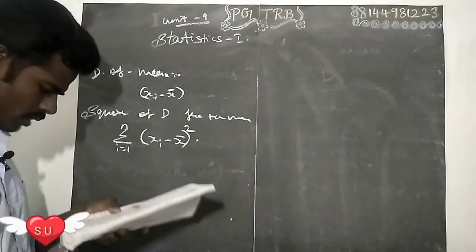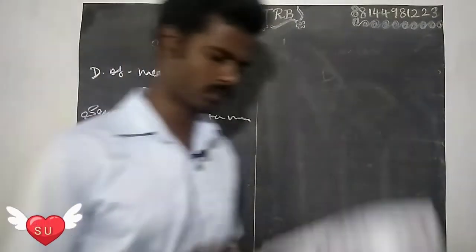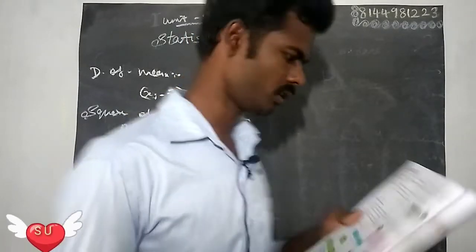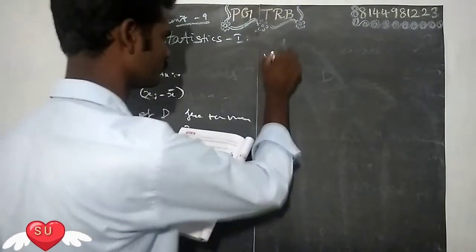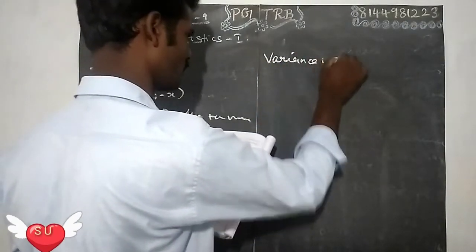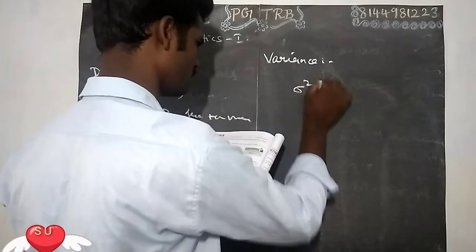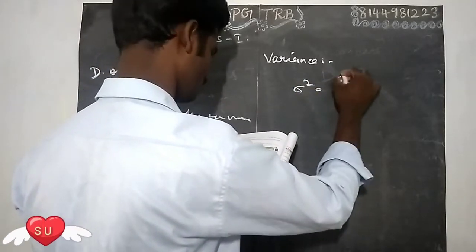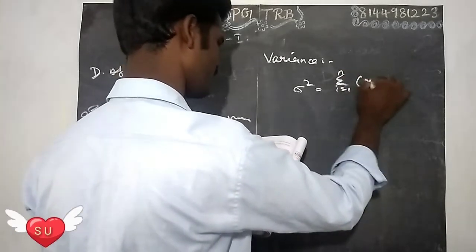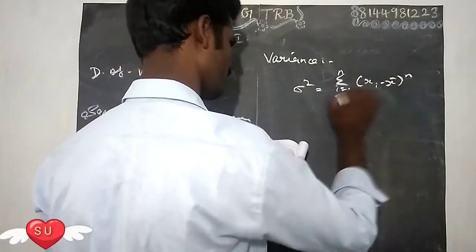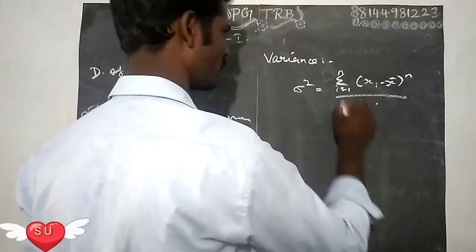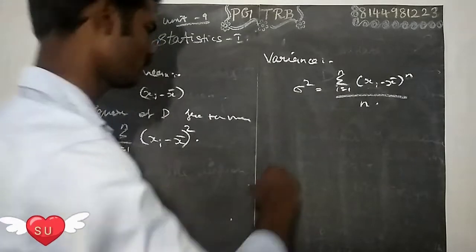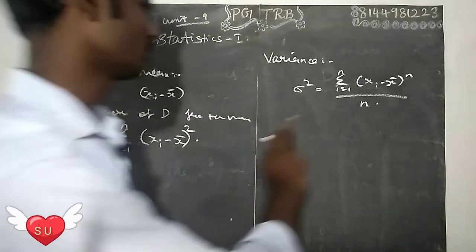Next is variance. Variance formula is sum of i=1 to n, X_i minus X̄ whole power, divided by n. Either number square of deviations. Sigma square equals square of deviation divided by n. So you don't be a variance formula.